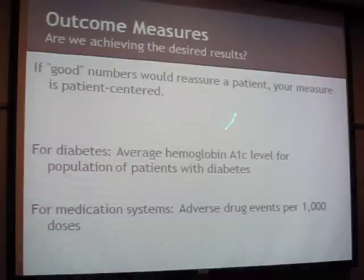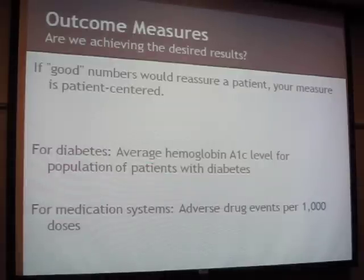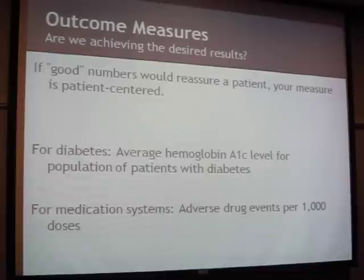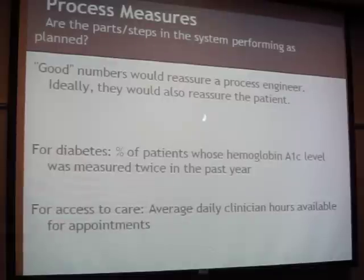Outcome measures are the big aim-statement-level measures - numbers that if presented to a patient would make them happy you're improving them. For example, with diabetes, the average hemoglobin A1c for a patient population is an outcome measure - something at the end of the process of managing diabetes. If you see a change in hemoglobin A1c levels, you know you're affecting the whole area of diabetes management. For medication systems, it might be the number of adverse medication events - how many times the wrong drug is given.